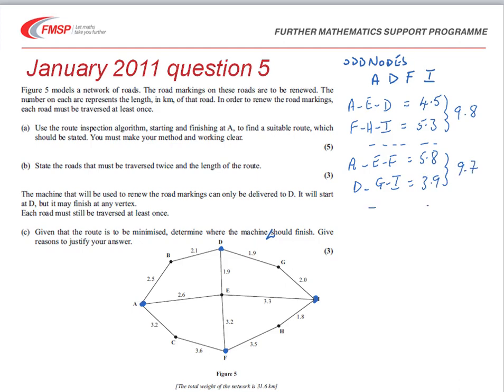The third set of pairings: A to I via E, which is 5.9, and D to F, also via E, is 5.1, giving there a total of 11.0.